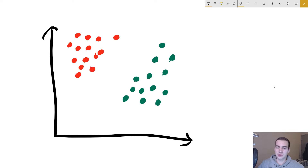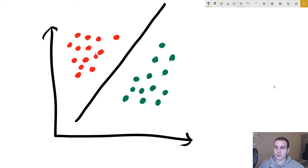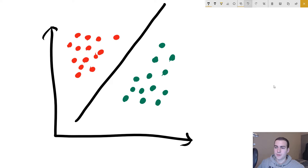A hyperplane for the dataset that I have up here could look something like this, and you can see that it's dividing our data points — green is on this side and red is on this side. Now, how do we create this hyperplane? What are the parameters for it?